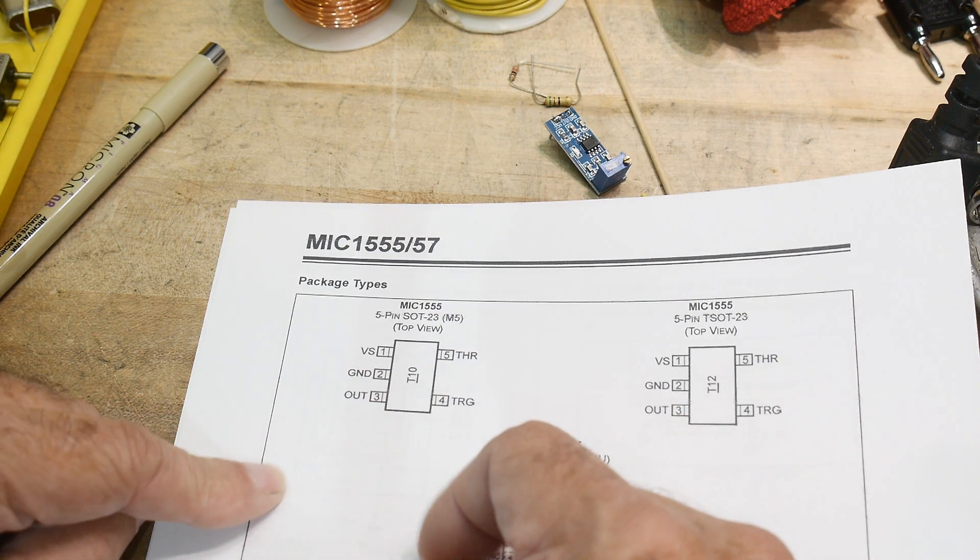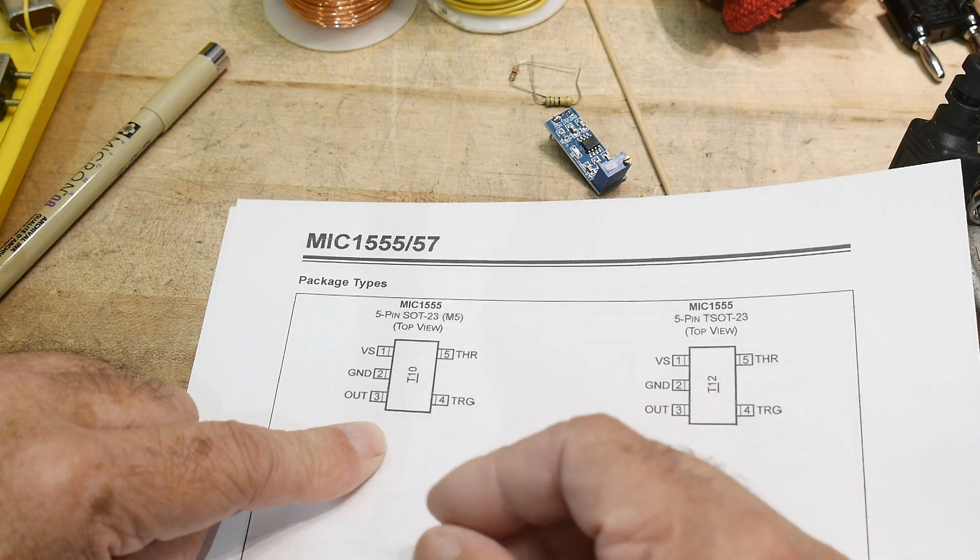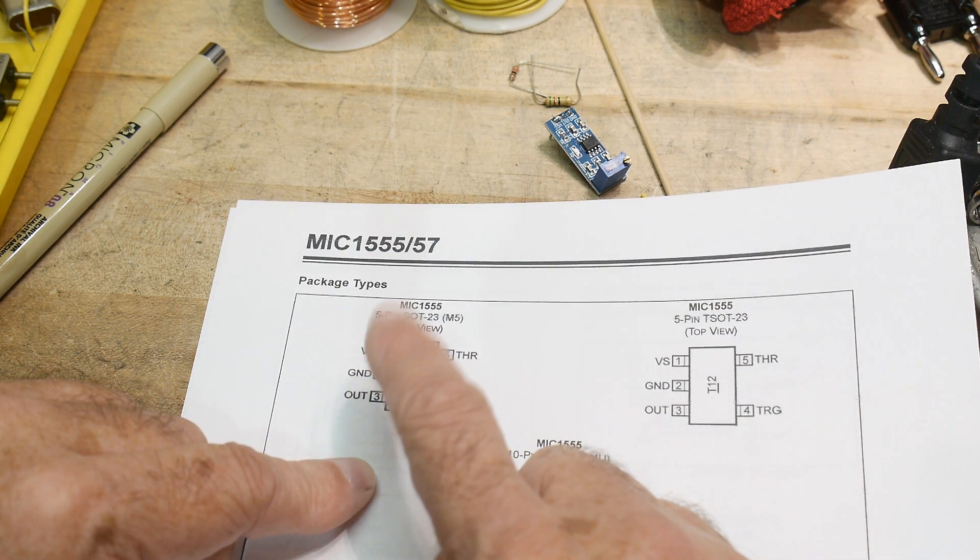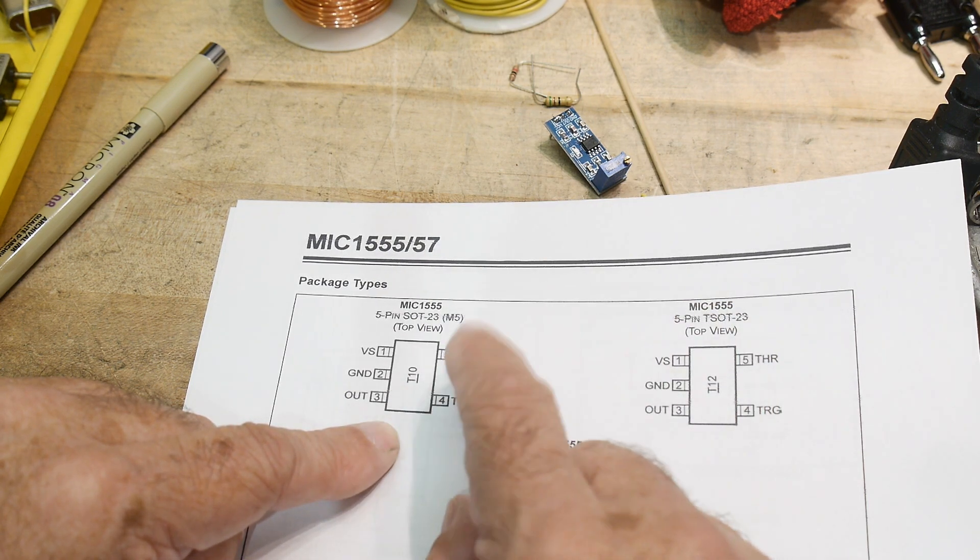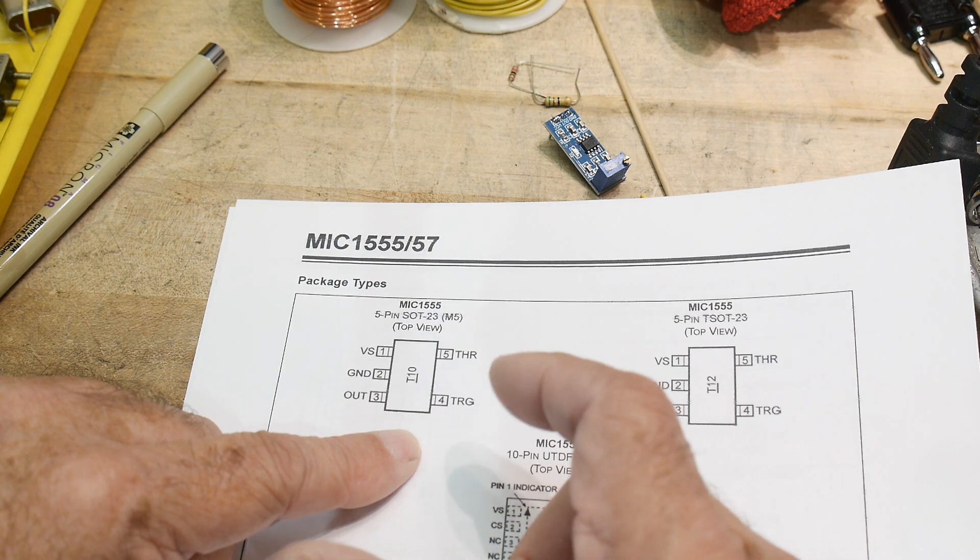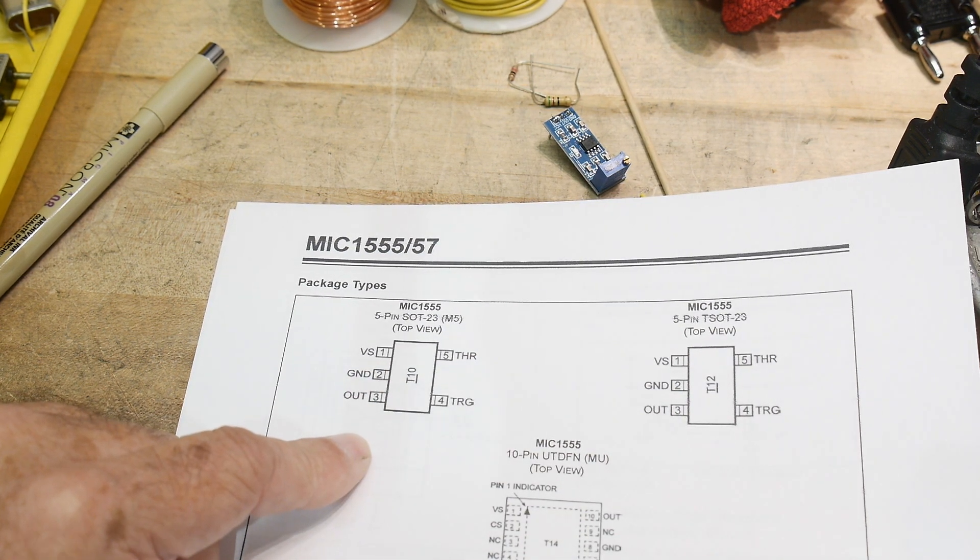And so the datasheet says so. So it can do all the things of a regular 555. You can say, well, what about the reset, the open collector reset to bleed the capacitor? Well, they just use the output pin to do that function.